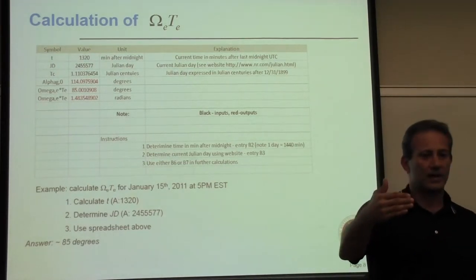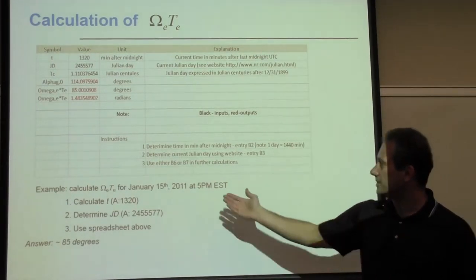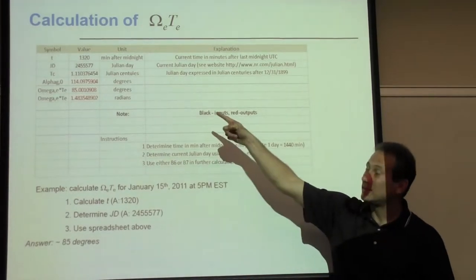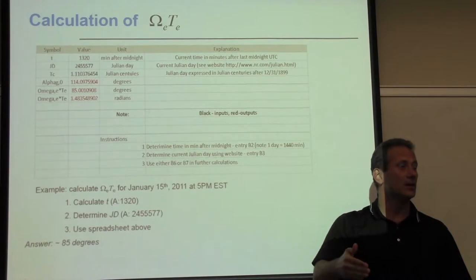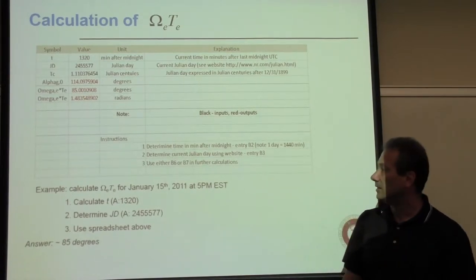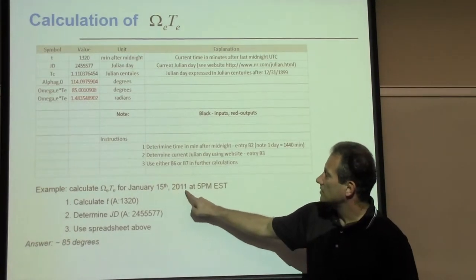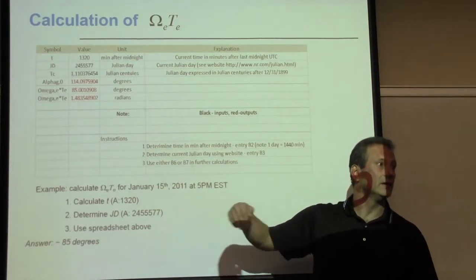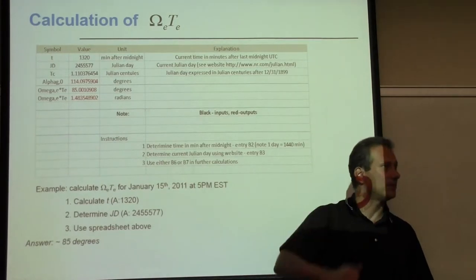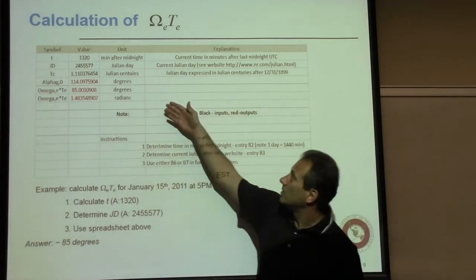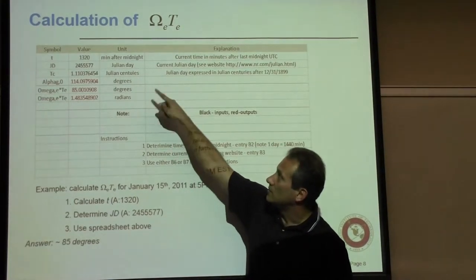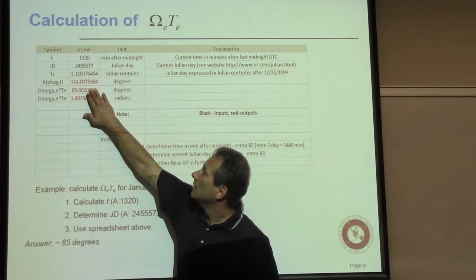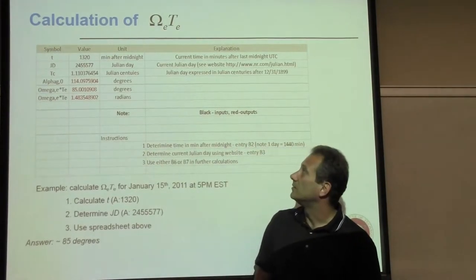Continuing with the six elements: the eccentricity is 0.0002282. An interesting convention in TLE data — eccentricity is listed without the decimal point, so you see 0002282 and interpret it as 0.0002282. This makes sense because all orbiting satellites have eccentricity between 0 and 1; anything greater than 1 means the object escapes and doesn't remain in orbit.